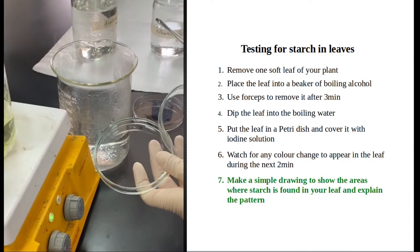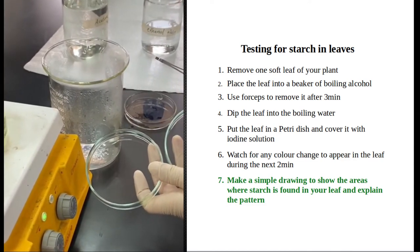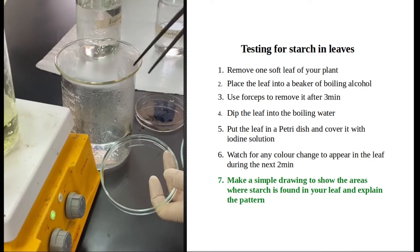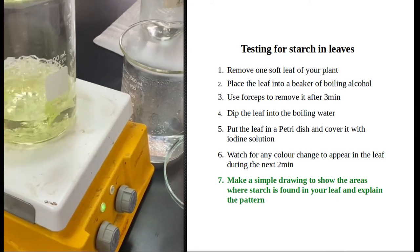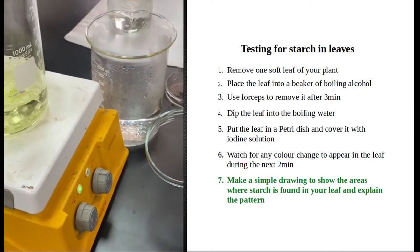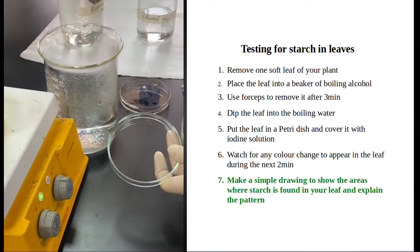I will cover them with iodine. Iodine will detect the presence of starch, so the areas where the leaf was undergoing photosynthesis must become dark blue, and the areas where the leaf is not undergoing photosynthesis should not become dark blue.